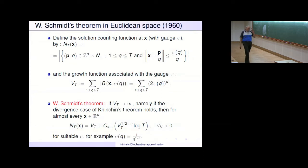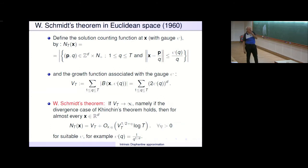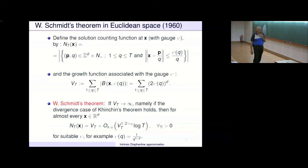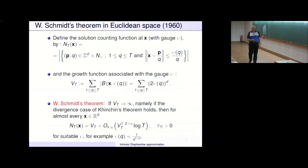Even more than that, Schmidt's theorem gives an error estimate. If V(T) goes to infinity — namely in the divergence case of Khinchin's theorem — then for almost all X, the number of solutions equals the volume growth plus an error estimate of order sqrt(V(T) · log V(T)). This is quite remarkable.